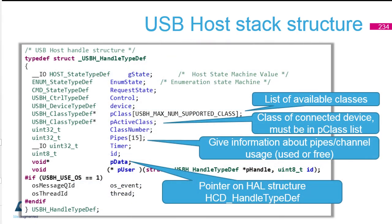For the first structure, this is the structure inside the USB host process. We have here the state of the host machine, the state of the enumeration, and some additional fields. Through this structure, the active class is connected, and as you can see, it's prepared to support more classes.